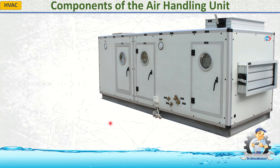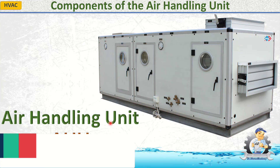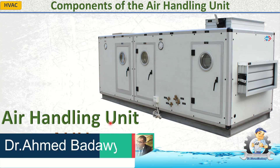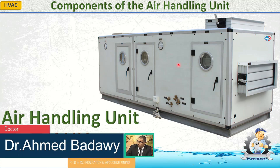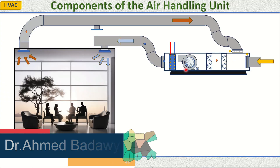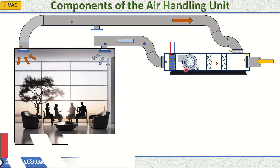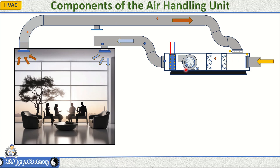An Air Conditioning Systems. An Air Handling Unit, AHU, is a key component in HVAC — heating, ventilation, and air conditioning systems. It is responsible for regulating and circulating air as part of a building's air conditioning and heating processes.